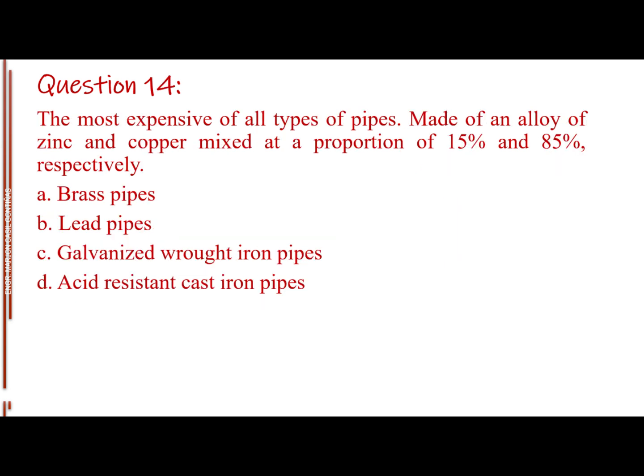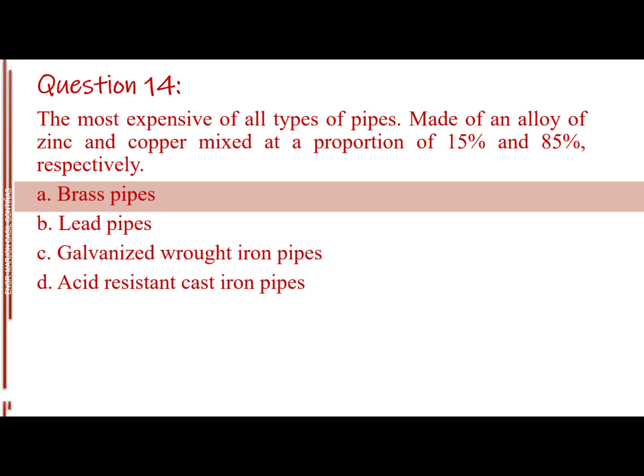Question number 14. The most expensive of all types of pipes. Made of an alloy of zinc and copper mixed at a proportion of 15% and 85%, respectively. Letter A, brass pipes. Letter B, lead pipes. Letter C, galvanized wrought iron pipes. Letter D, acid-resistant cast iron pipes. The answer is Letter A, brass pipes.